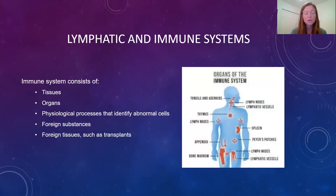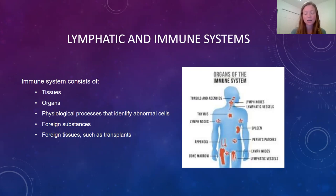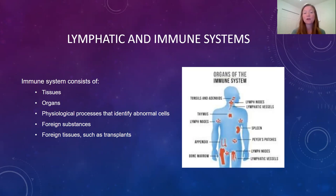Our immune system works with our lymphatic system to clear the body of disease-causing agents. The lymphatic system filters blood and lymph of any foreign substances. It also helps maintain fluid balance and absorbs fat from our digestive tract. Lymph is basically a clear yellowish fluid that helps carry disease-fighting cells called lymphocytes to various parts of our body when we have infection or when we need to fight. Together, the lymphatic and immune systems protect the body against bacteria, viruses, fungi, toxins, parasites, and cancers.